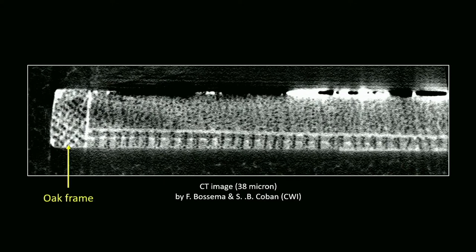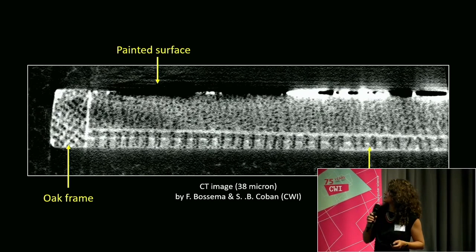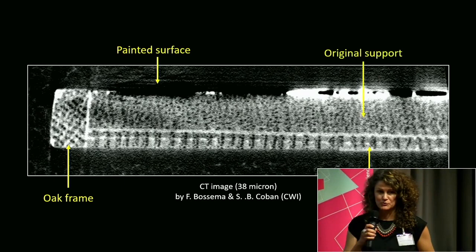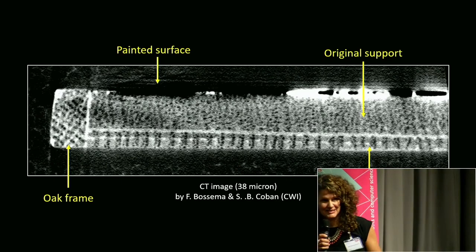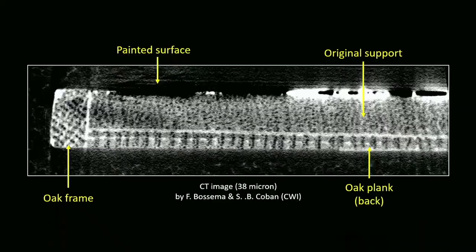When we saw this the first time, the question came to mind right away. What we see here is the oak frame, the painted surface, some distortion caused by metal in the paint, and the oak plank we were seeing at the back — we can see the tree rings, which was very good for dating. But we also see a different type of wood. All of a sudden the date of the oak plank at the back is totally irrelevant, because the painting was actually painted on a different type of wood in a different plank altogether. We really needed to know what that was.